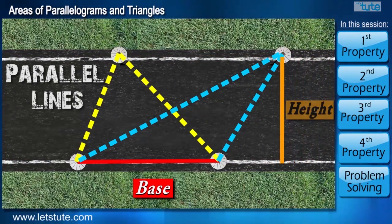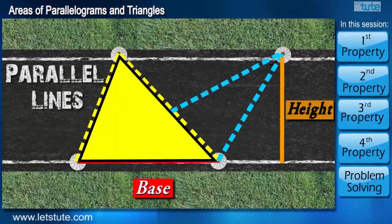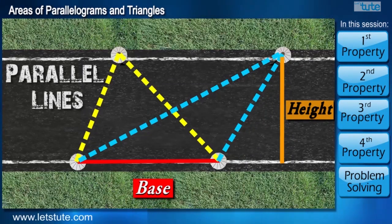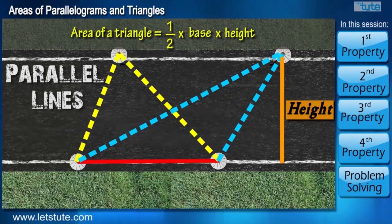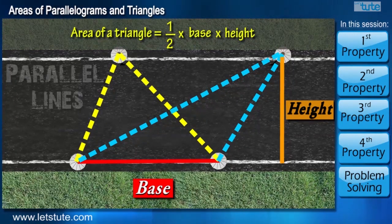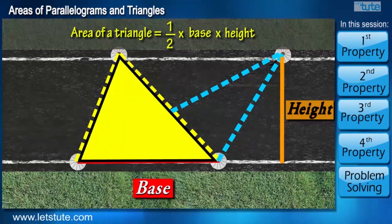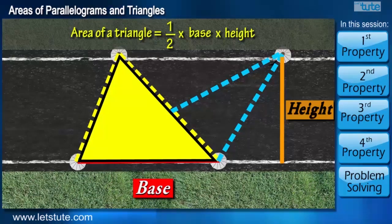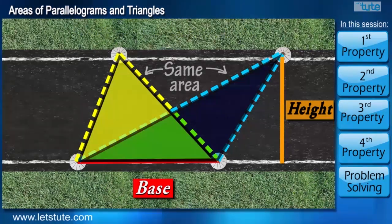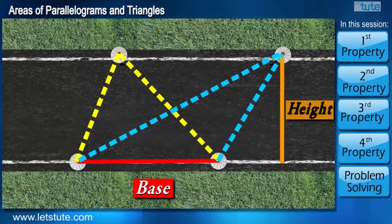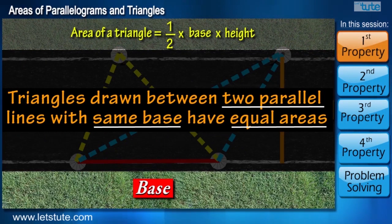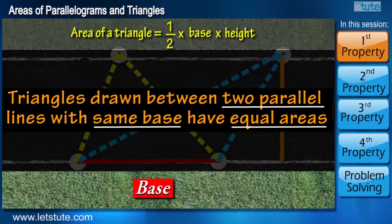We know the distance between two parallel lines is always constant. Therefore, height and base is same for these triangles. So when we calculate the area using the formula half into base into height, since the base and height of both triangles is same, the area of the triangles is also going to be the same. From this we can conclude, when two triangles are drawn between the same parallel lines and having the same base, their areas are also going to be equal.